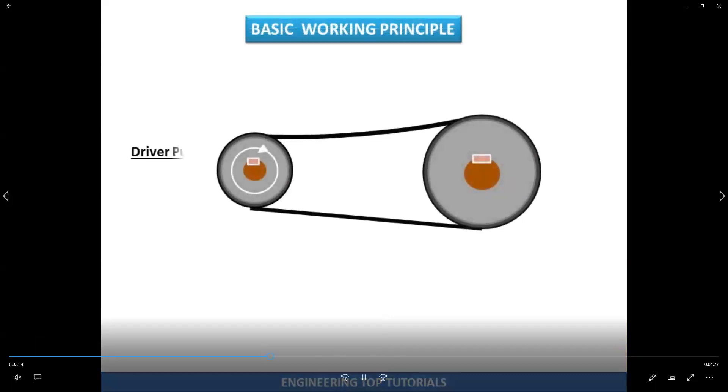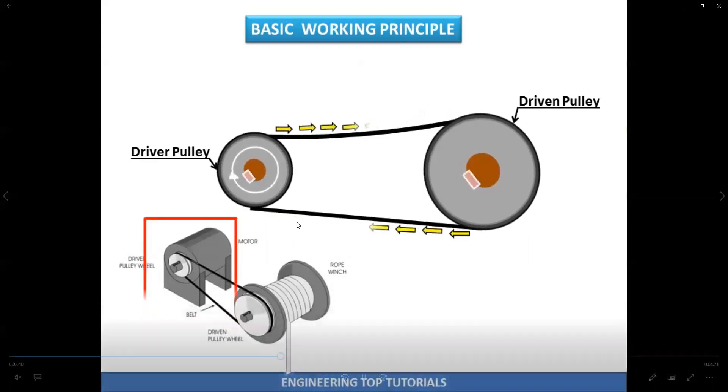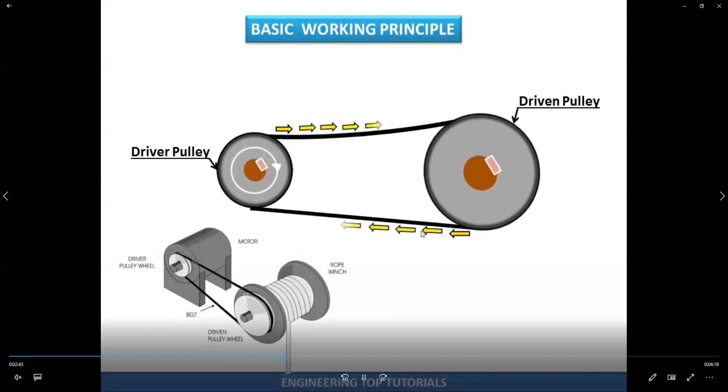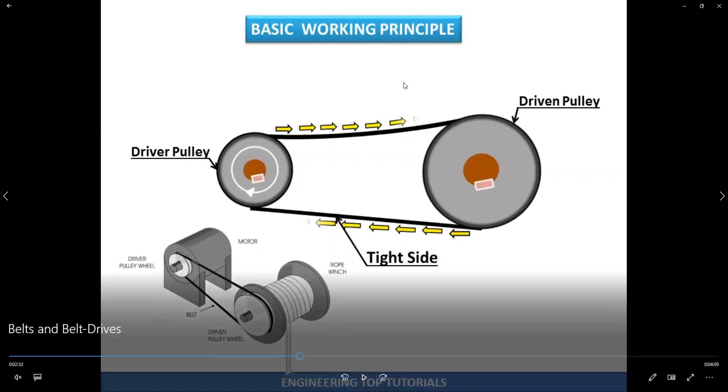The basic working principle for the belt: one side is the driver, another side is driven. The driver is connected to the motor and turns first, and the other one will follow, like the driver of a car. When the belt is turning, one side is the tight side and another one is the slack side.